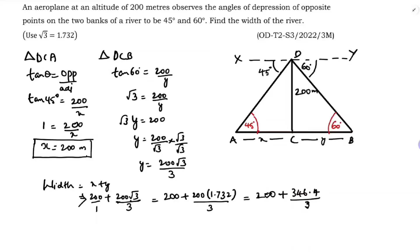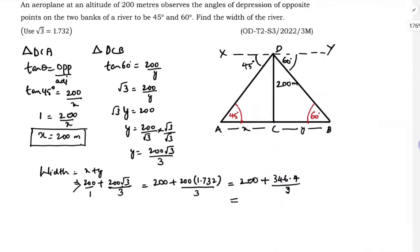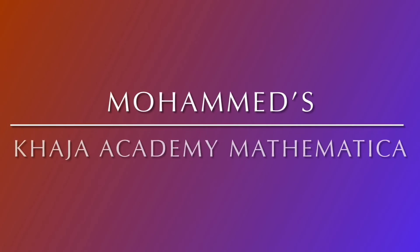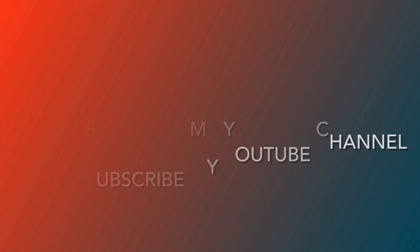346.4 divided by 3 gives approximately 115.46. So 200 plus 115.46 equals 315.46 meters. Therefore, the width of the river is 315.46 meters.